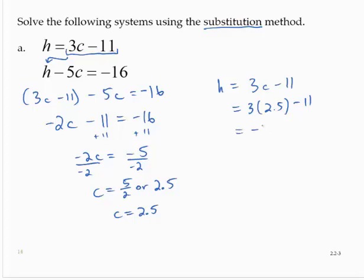That would be 3 times 2.5 is 7.5 minus 11, and 7.5 minus 11 is negative 3.5.